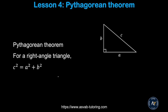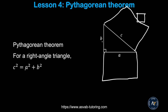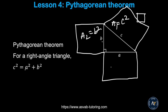Finally, we'll learn the Pythagorean theorem. For a right triangle with sides a, b, and c, the formula is a² + b² = c². Visually, if you draw a square on each side, the area of the square on side a plus the area on side b equals the area of the square on the hypotenuse c.